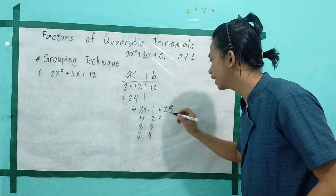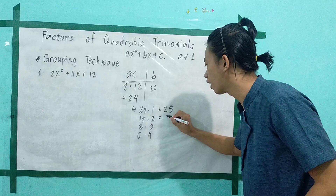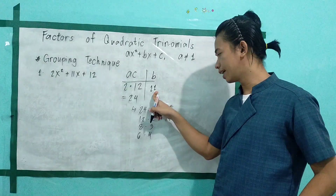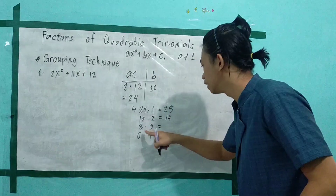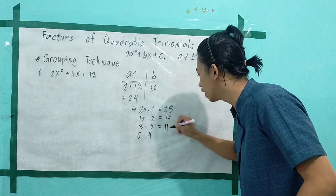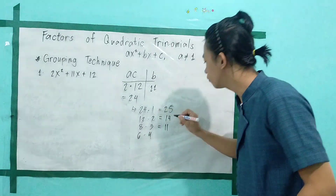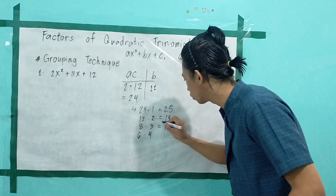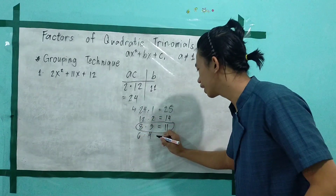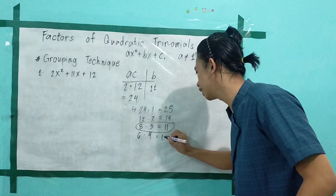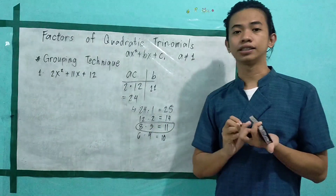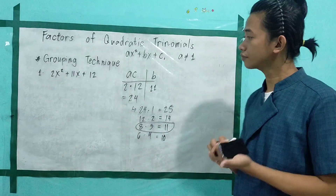8 plus 3, we have 11 — same as b! Yes, therefore this is the pair we will use. And 6 plus 4 is equal to 10, which is not the same. So our factors are 8 and 3.